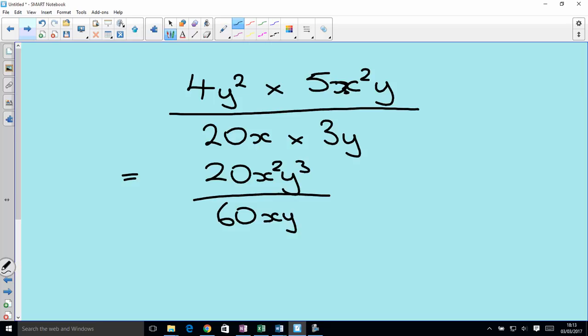Can we simplify this fraction? Yeah, we can. 20 and 60 can both be divided by 20. We get 1 and 3. x squared and x can both be divided by x. We get x, and that one cancels out. Y cubed and y can be divided by y. We get y squared on top and y divided by y is 1.